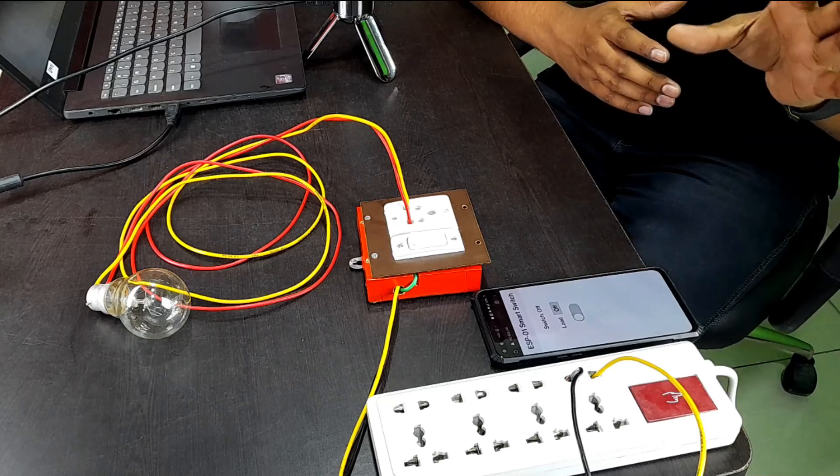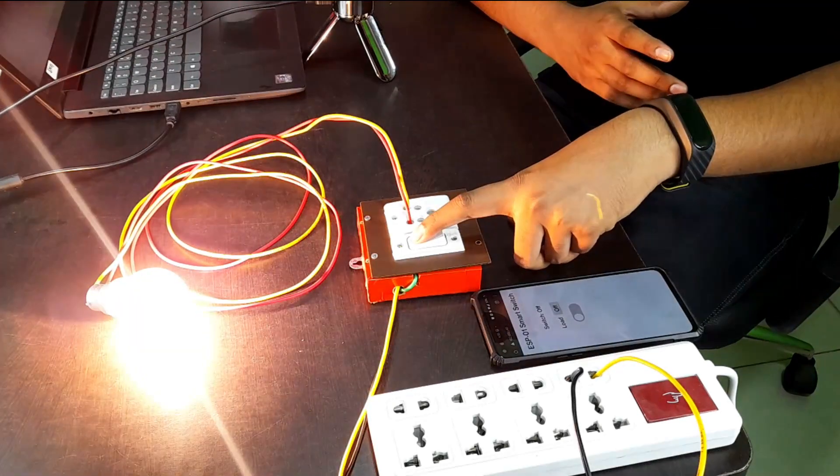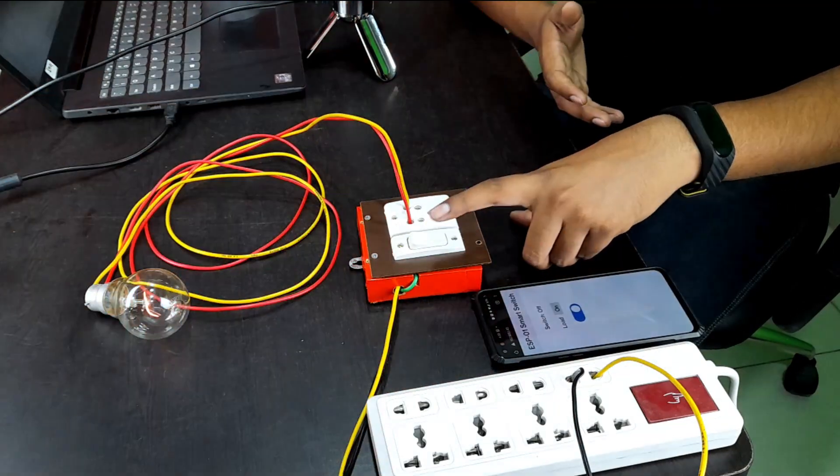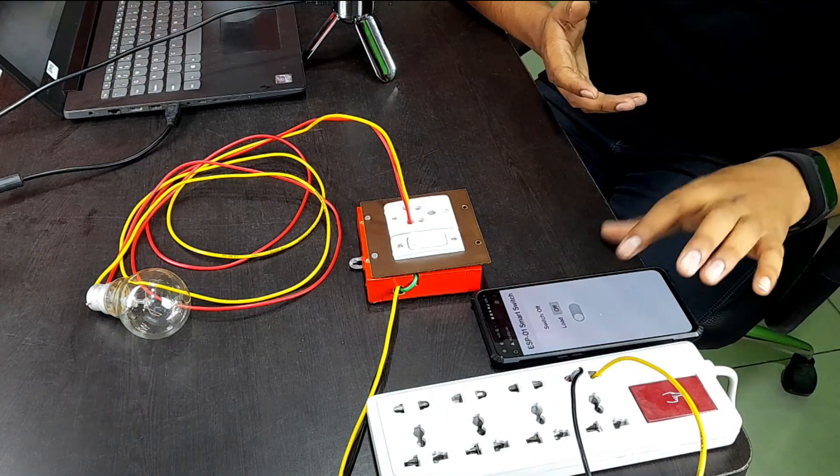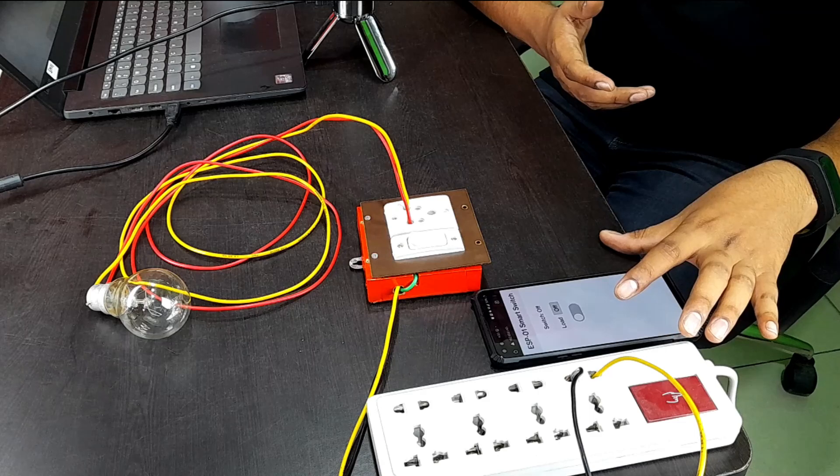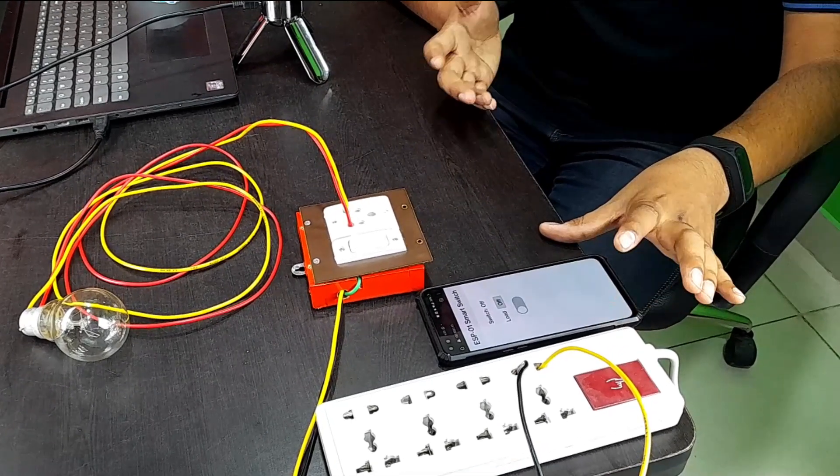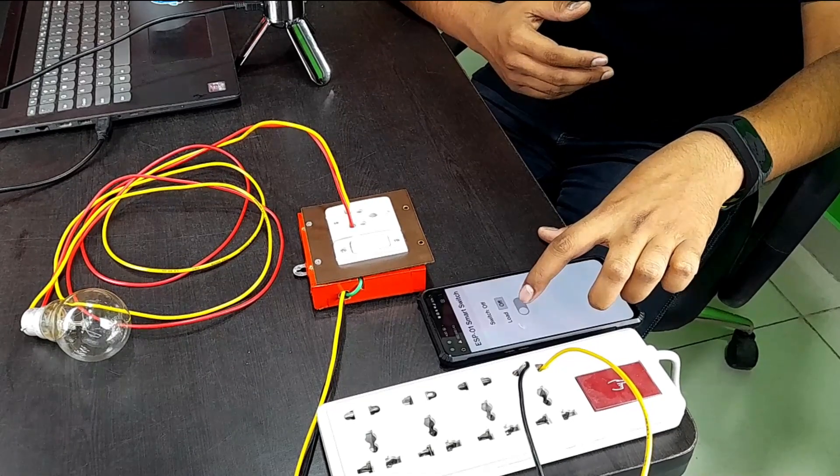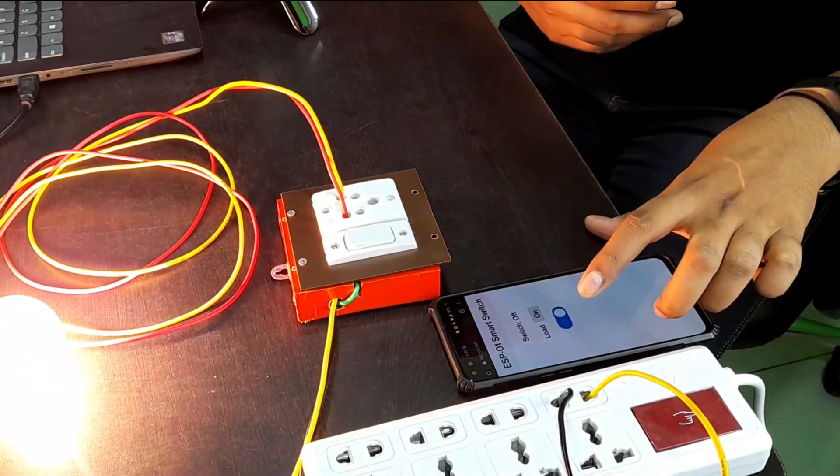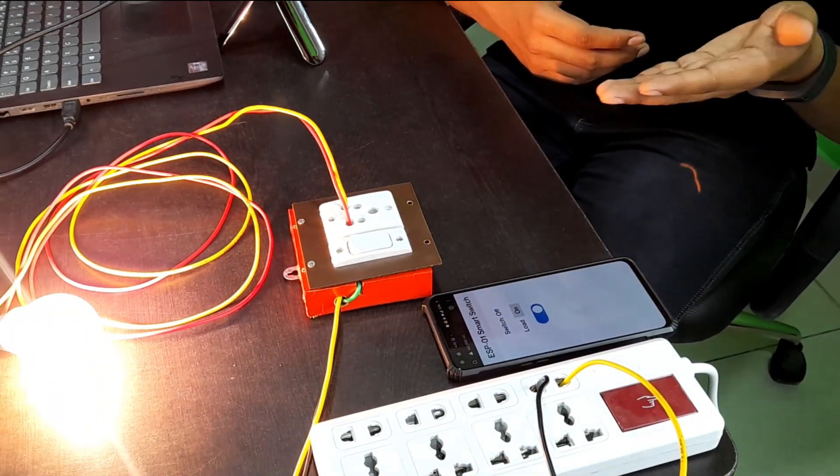To turn the switch on, you can simply turn it on like this and turn it off like a normal switch. But if you want to turn the switch on without getting up from your comfort zone, you can just open up the web app and toggle this button and it will turn the load or any bulb connected on.